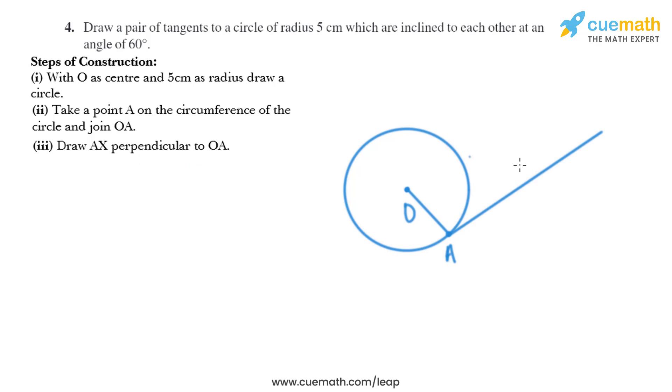So we need to draw AX that is perpendicular to OA. This angle is basically 90 degrees. Now in the next step, construct angle AOB equal to 120 degrees where B lies on the circumference.